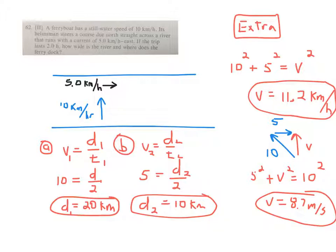So I drew the river here. There could be some misinterpretation of this problem, but basically I think the intent of the problem is the helmsman, or the driver of the ferry, pilot, whatever, is aiming straight across.